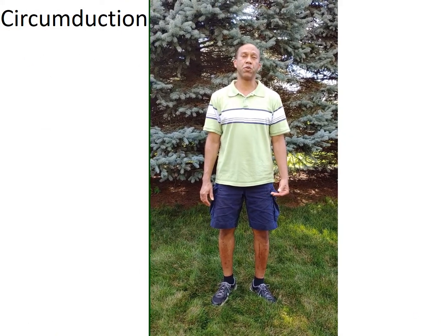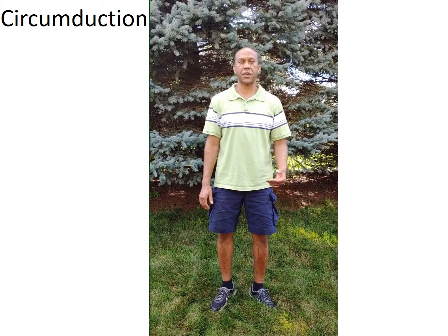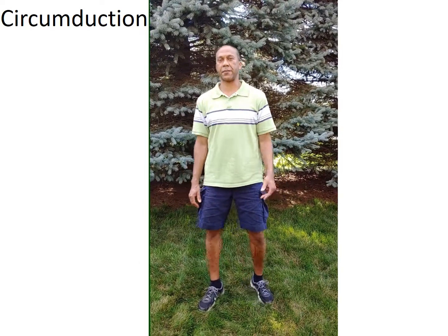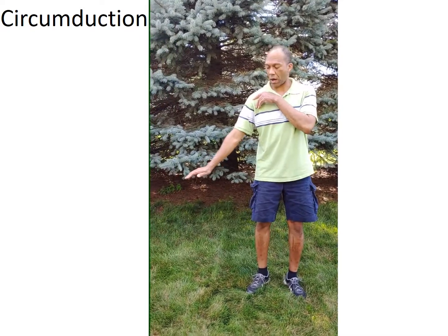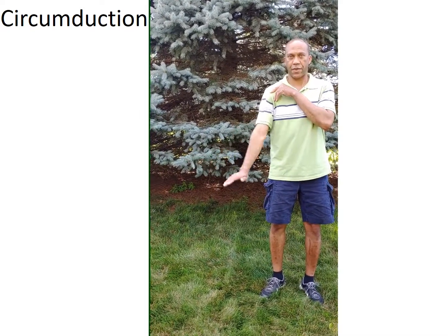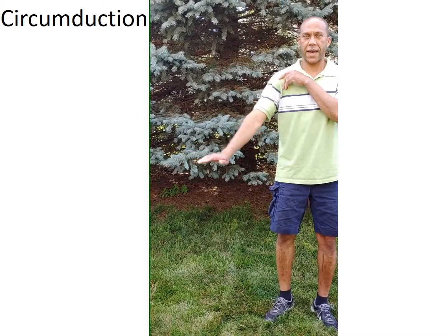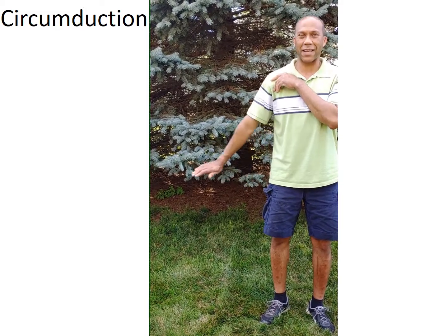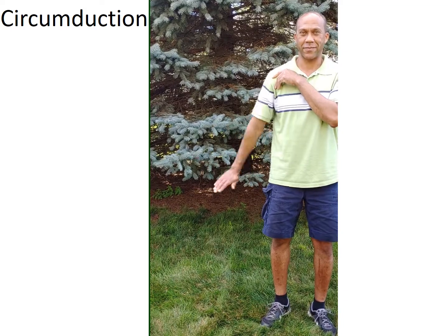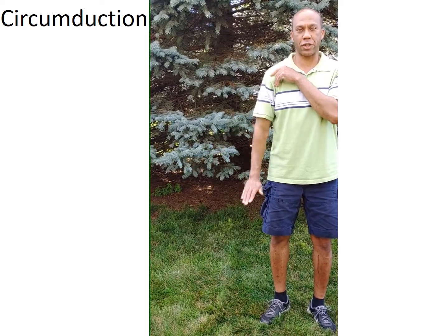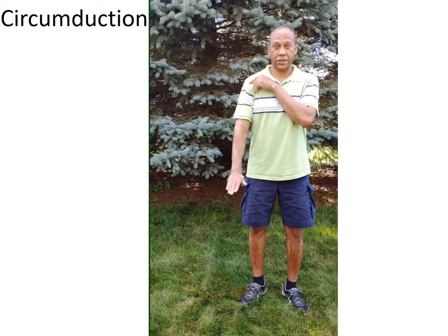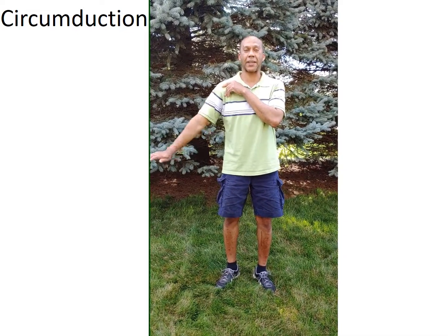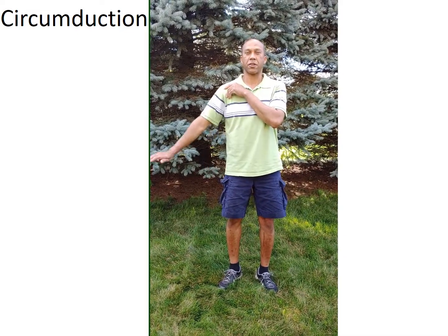Circumduction is movement of a limb so that it outlines a cone. If I were to take my upper appendage and do that movement, notice that my arm — my upper appendage — would be outlining a cone. This is a combination of flexion, extension, abduction, and adduction. Circumduction.